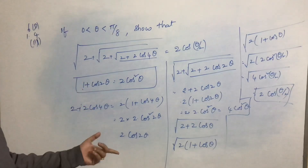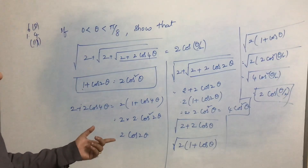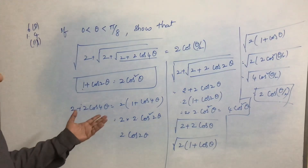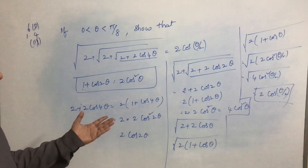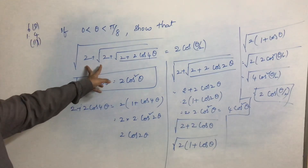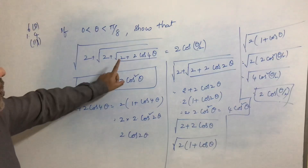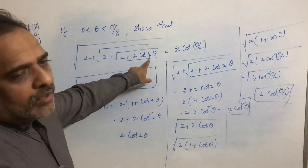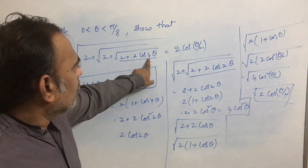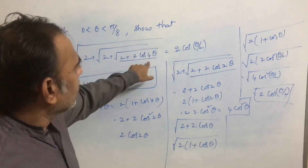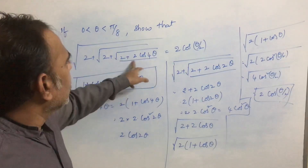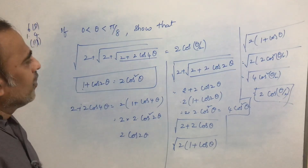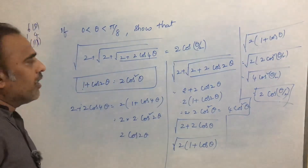Anyone has questions in this? Just note it down — in future if you have any doubts, just message me and I will reply. The trick here is that there are 3 nested roots, so we divide 4θ by 2 three times, which gives us θ/2. That is the shortcut.